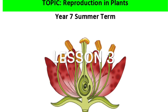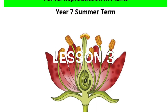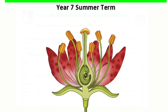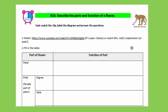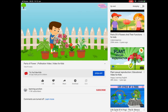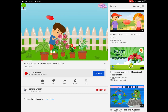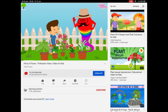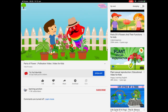Welcome to lesson three on plant reproduction, starting with SC6: describe the parts and function of a flower. You're going to be filling out a grid with the function of each of the parts of the flower. We're going to do this in two ways — first you're going to watch a video. It's really for younger kids and quite cheesy, but it still gets some really important information across.